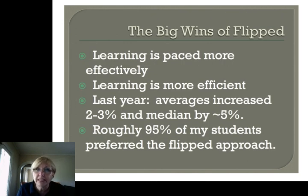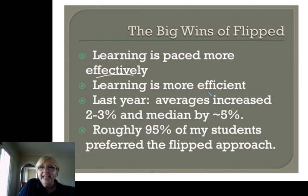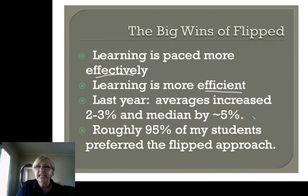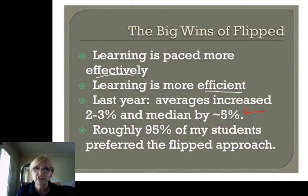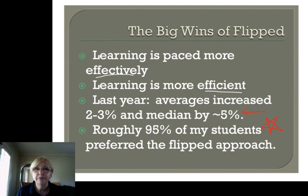It is a much more effective and efficient way for your kids to learn. I saw my averages increase about 2 to 3 percent compared to the previous year's test, and the median increased anywhere from 5 to 8 percent. It's because some of the low B students — the ones who get really discouraged — this method helps them work through that discouragement. My kiddos loved the way I do flipped: 95 percent of my students preferred the flipped approach to learning.